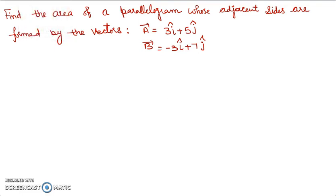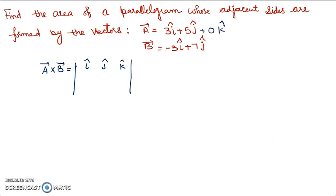For practice with cross products: find the area of a parallelogram whose adjacent sides are given by these two vectors. We learned that to find the area of a parallelogram, we need the magnitude of the cross product. Notice here that there is no k cap component, so to use our standard method, we write 0 times k cap. Setting up the determinant with i cap, j cap, k cap: coefficients 3, 5, 0 for the first vector and −3, 7, 0 for the second.